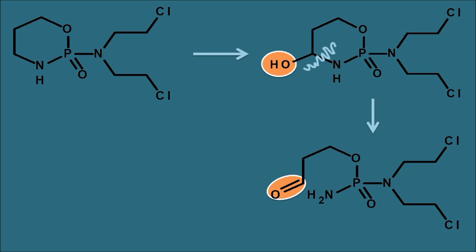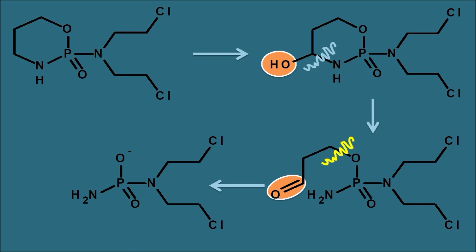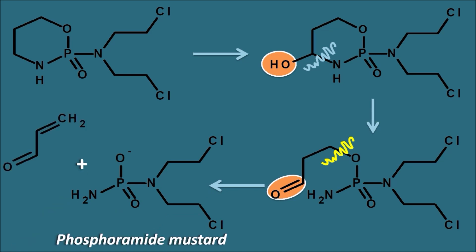Aldophosphamide can be split into two components by cleavage at a specific position — one is phosphoramide mustard and the other is acrolein. In this way, aldophosphamide releases phosphoramide mustard and acrolein, and phosphoramide mustard produces the alkylating effect on the DNA.